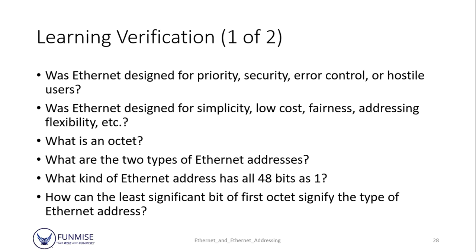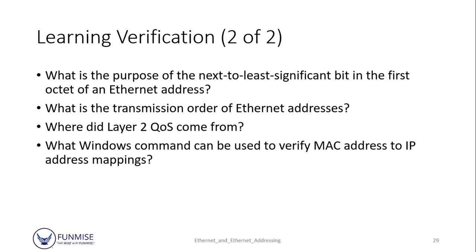At the end of this lesson, you should have been able to answer: Was Ethernet designed for priority, security, error control, or hostile users? Was Ethernet designed for simplicity, low cost, fairness, addressing, flexibility, etc.? What is an octet? What are the two types of Ethernet addresses? What kind of Ethernet address has all 48 bits set to one? How can the least significant bit of the first octet signify the type of Ethernet address? What is the purpose of the next two least significant bits? What is the transmission order of Ethernet addresses? Where did Layer 2 QoS come from? And what Windows command can be used to verify MAC address to IP address mapping?